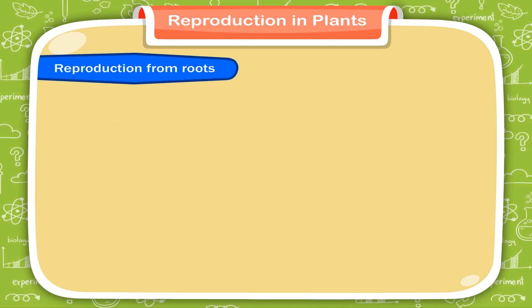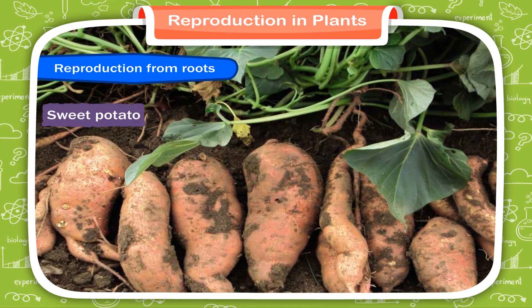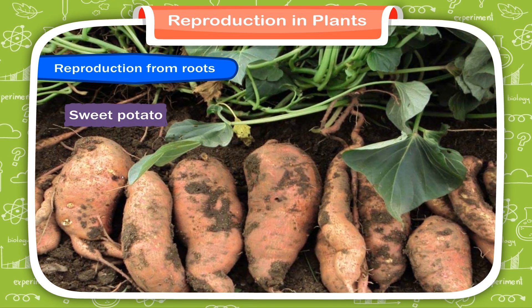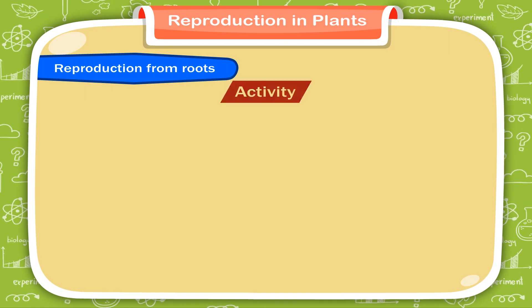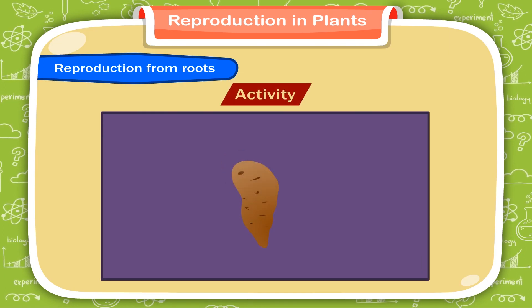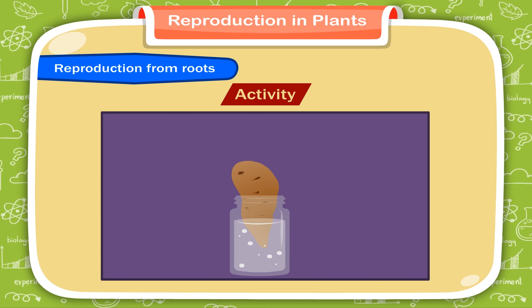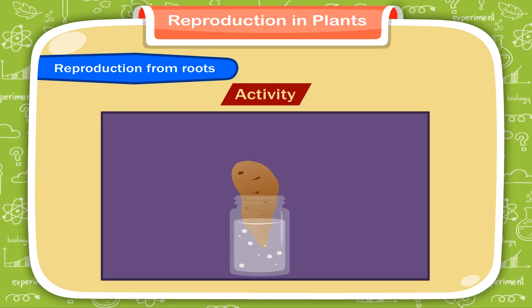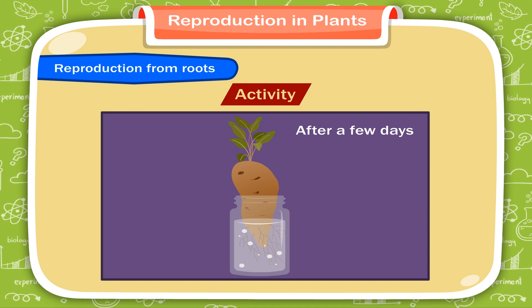Reproduction from roots. The roots of plants like sweet potato grow as new plants. Activity: Take a sweet potato and support it in a bottle containing water using toothpicks. You will find that after a few days, a new plant grows in the bottle.